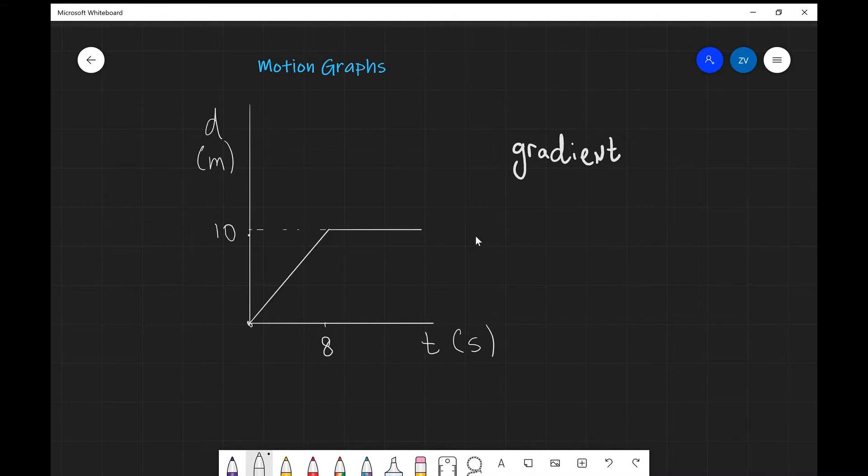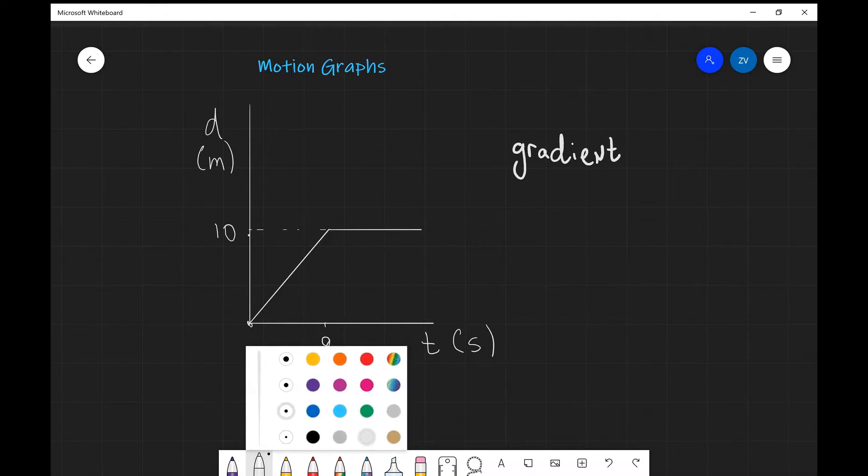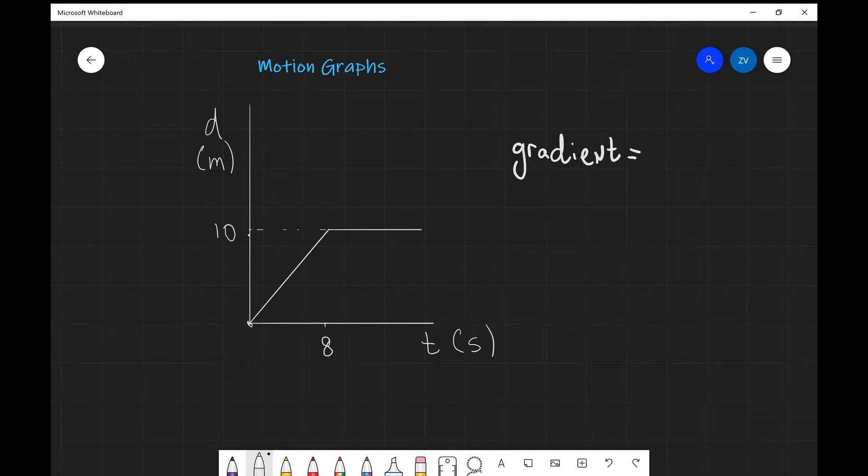One of the first questions that we need to ask is what is the gradient in this case? Well, remember in general the gradient is equal to the change in the y-axis divided by the change on the x-axis. What we have on the y-axis is the displacement, so in this case the gradient is going to be the change in displacement divided by the change in time.